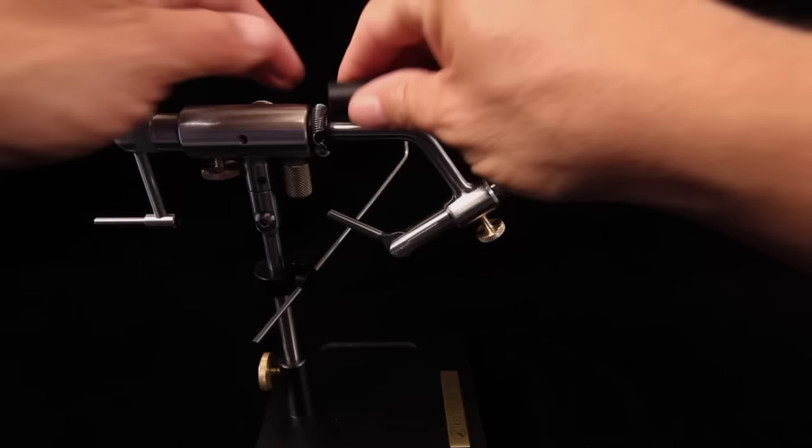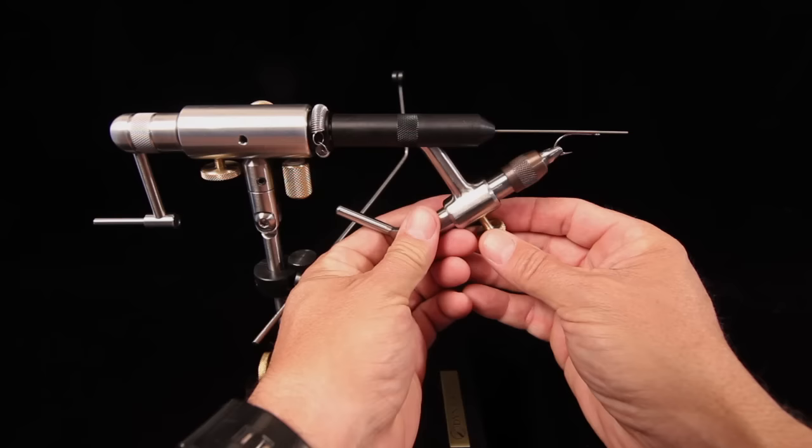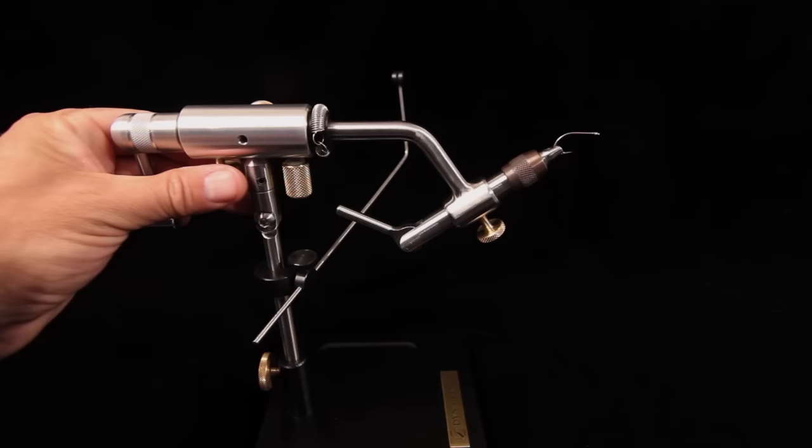To prepare the vise for rotary tying, snap on the supplied centering gauge. Raise or lower the vise body to bring the shank of the hook into alignment with the gauge. Once this is done, remove the gauge and loosen the rotary lock screw.